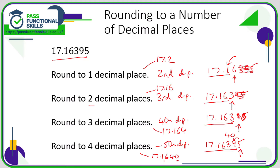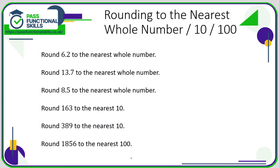So to four decimal places it would be 17.1640. The zero does need to be there — 17.1640 has the same value as 17.164, but if you write 17.164 you only have three decimal places. We have to keep the zero so that we actually have four decimal places, because that's what the question asks. When rounding to the nearest whole number — the nearest unit — we look at the column to the right of the units, which is the tenths column. Here, 6.2: the digit is less than five, so that rounds down to 6.